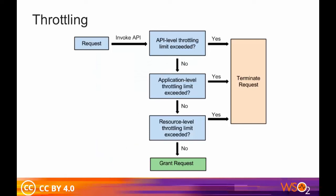Throttling allows you to limit the number of hits to an API during a given period of time. Every API has a set of built-in handlers that will be executed for each API request. Throttling is used typically in cases such as: making an API, application, or a resource available to a consumer at different levels of service, usually for monetization purposes; protecting APIs from common types of security attacks, including denial of service; and regulating traffic according to infrastructure availability.